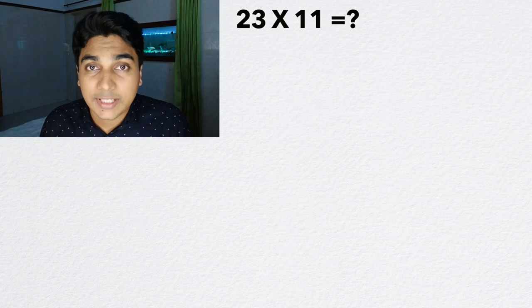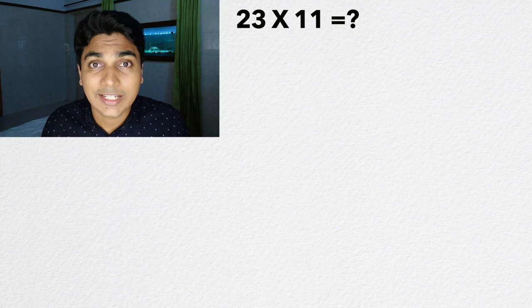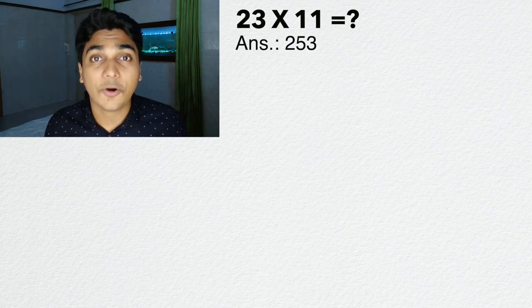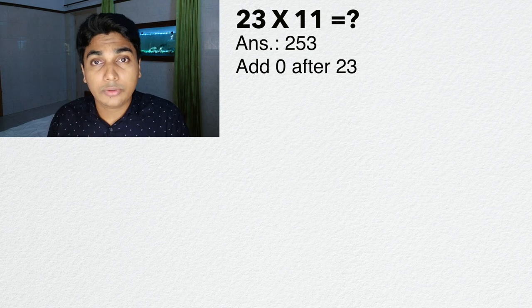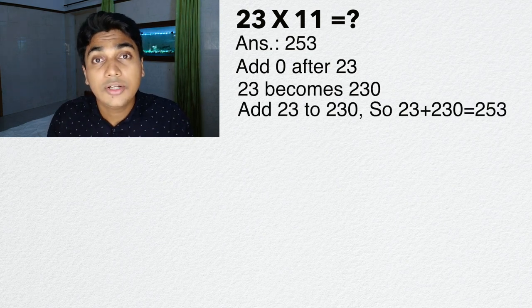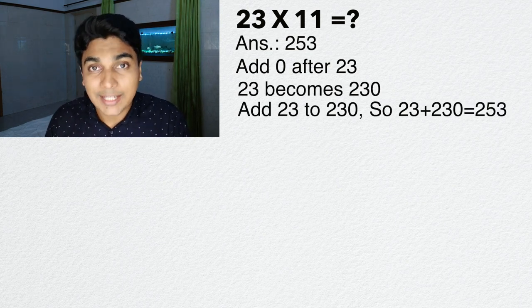What is 23 times 11? The answer is simple. It is 253. How did I get it? I just added 0 after 23. You got 230, right? Now add 23 to 230, you get 253.